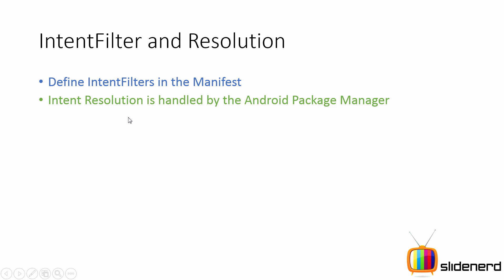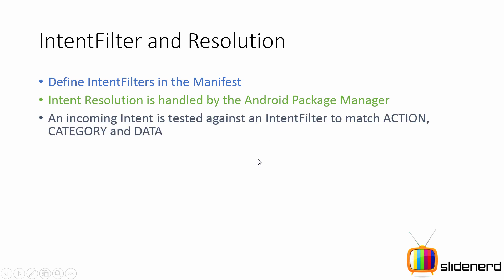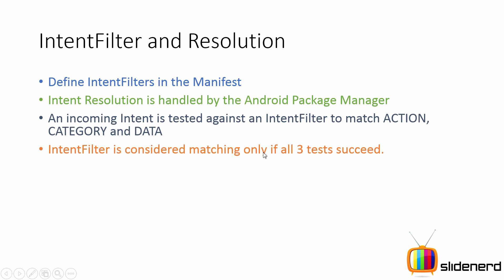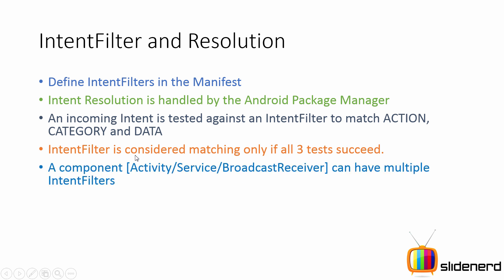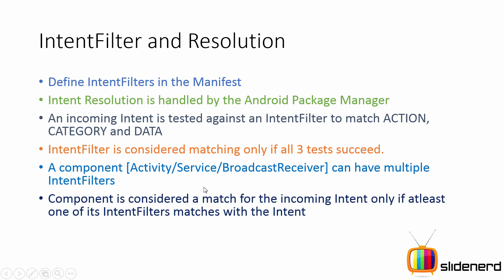Let's take a look at those rules. First, define your intent filters in the manifest. Intent resolution is handled completely by the Android package manager. An incoming intent is tested against an intent filter to match action, category, and data, and the intent filter is considered matching only if all three tests succeed.